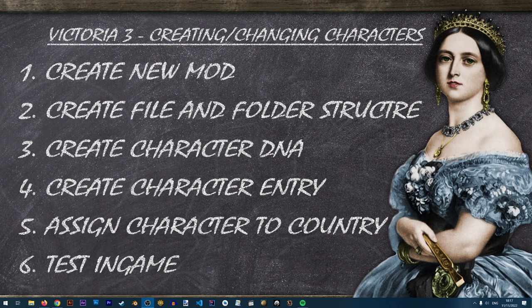In step three we'll be creating our character DNA using the built-in character creator. You'll need to start the game in debug mode — I'll have a link to a separate lesson on how to open debug mode in the upper right corner. In step four we'll create our character entry. In step five we'll assign our new character to an existing country — in this case Prussia. In step six we'll test our new character in game. We'll now move directly to step two: creating the file and folder structure.